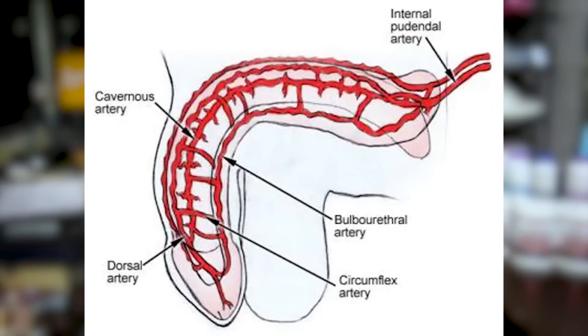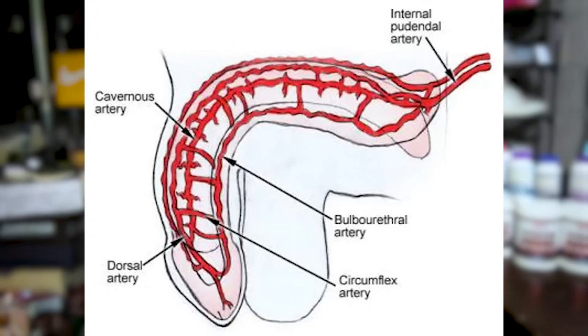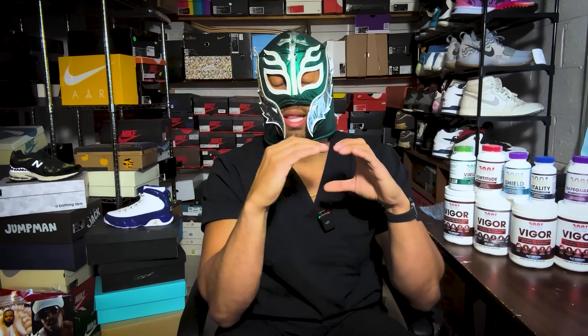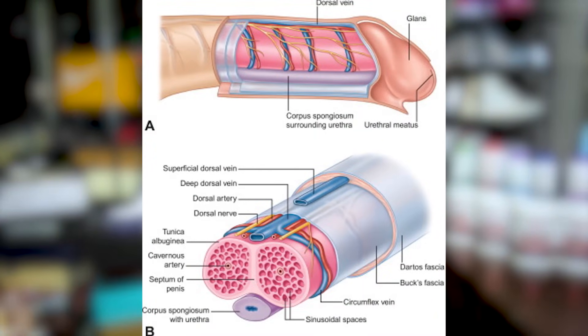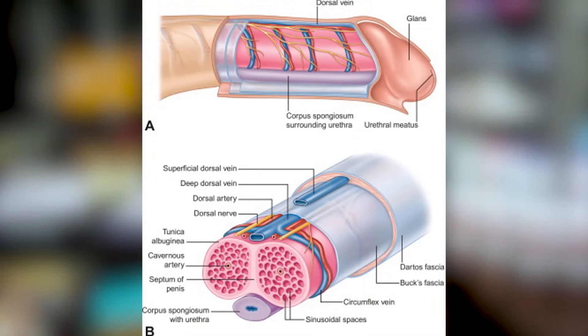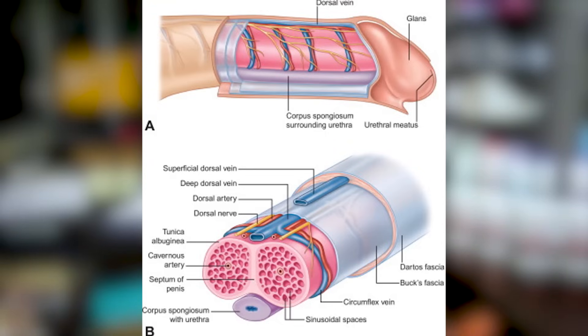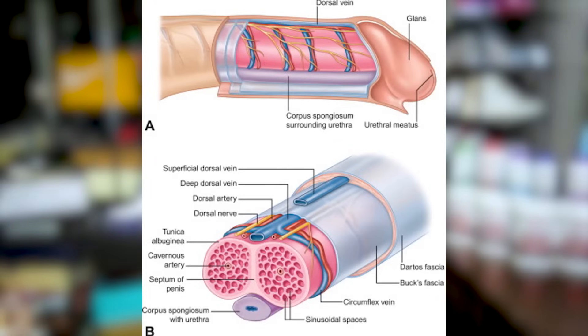When you get an erection, increased blood flow causes those sinusoids to dilate, and as they dilate they put pressure on the venous drainage — the veins that take blood away from the penis. As those areas fill up, they clamp off the veins, trapping blood in the penis, which leads to an actual erection. The venous drainage is primarily from the superficial and dorsal veins of the penis, which are separated by Buck's fascia, draining into the internal pudendal veins. On MRI, the only well-visualized vein is actually the dorsal vein of the penis.